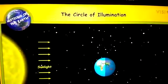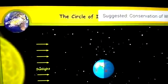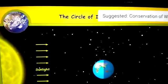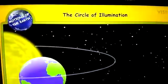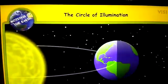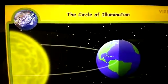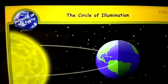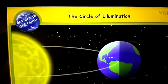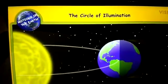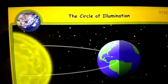The circle of illumination is an imaginary line which separates the lighted part of the earth from the dark one. Thus, the portion of the earth that receives sunlight experiences day, while the portion which is in darkness experiences night. The length of the day and night is not the same throughout the year. The variation is due to the inclination of the earth's axis.